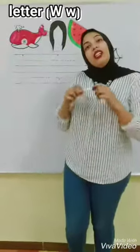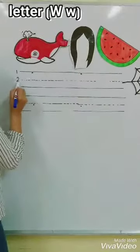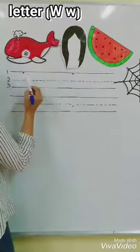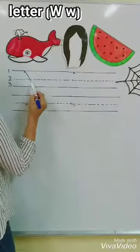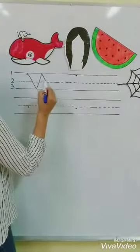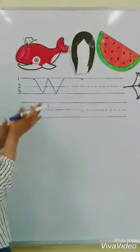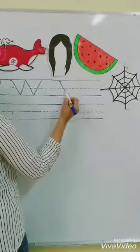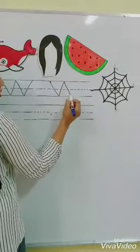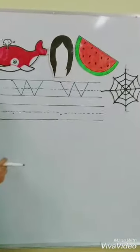Let's start to write capital W and small W. What do we have here? We have three lines. One, two, three lines. We start from the dot. Excellent! How to write capital W: from the dot, sloping line down, stop and touch line number three, sloping line up, touch line number one, sloping line down, touch line number three. Excellent! One more time: from the dot, sloping line down, touch line number three, sloping line up, touch line number one, sloping line down, touch line number three again. Excellent! Bravo!